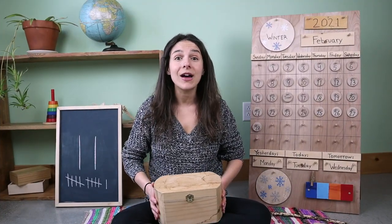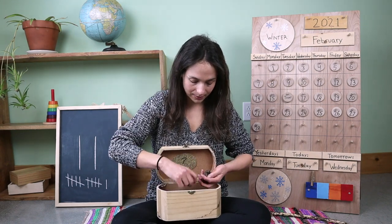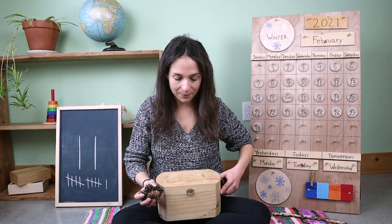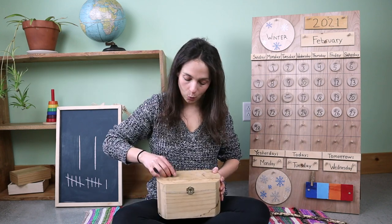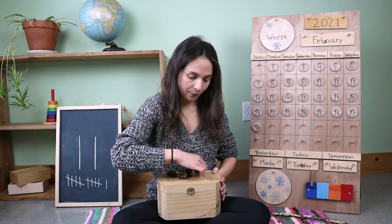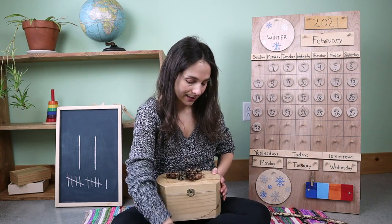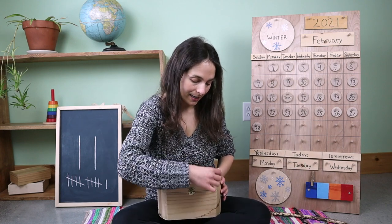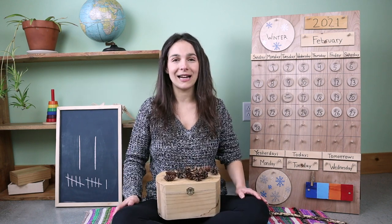Inside of my box, I have 11 pine cones to count. So let me gather them all up. I have so many today — I hope they all don't roll off the top of the box. Will you count them with me? Here we go. One, two, three, four, five, six, seven, eight, nine, ten. And one more makes 11. Eleven pine cones.